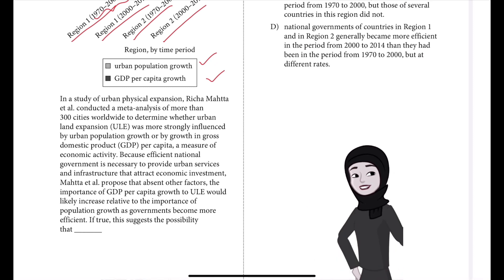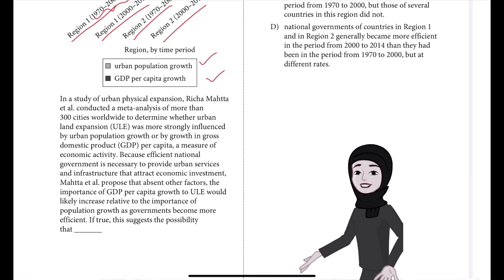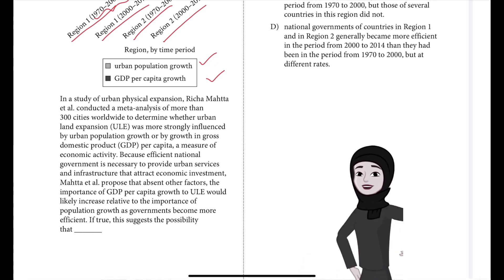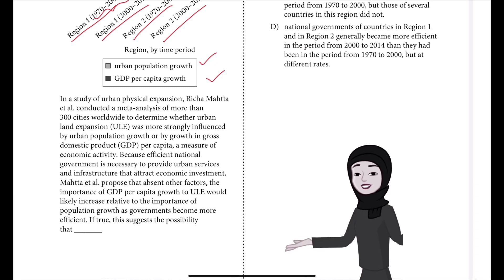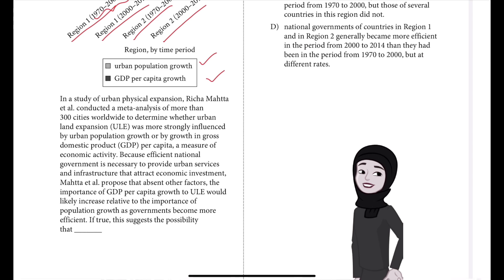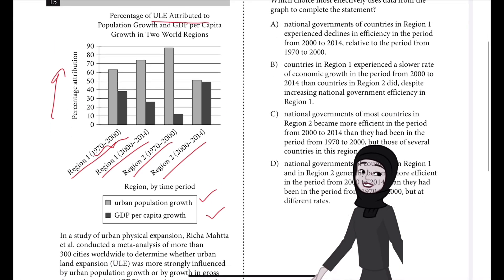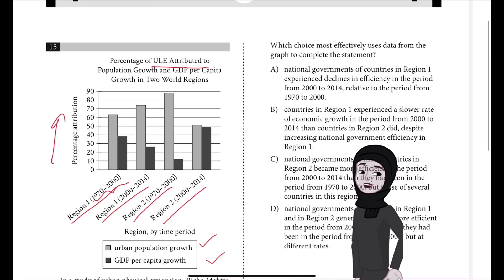Because efficient national government is necessary to provide urban services and infrastructure that attract economic investment, Meta et al. proposed that, absent other factors, the importance of GDP per capita growth to ULE would likely increase relative to the importance of population growth as governments become more efficient. If true, this suggests the possibility that — what we are analyzing is the urban land expansion, that is the ULE.